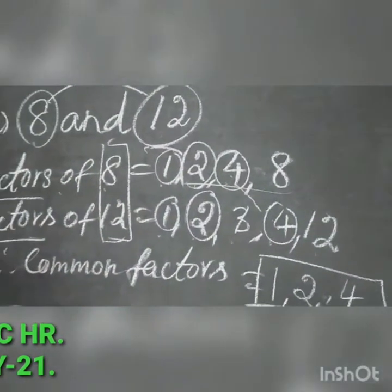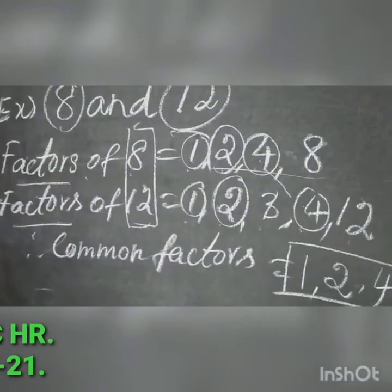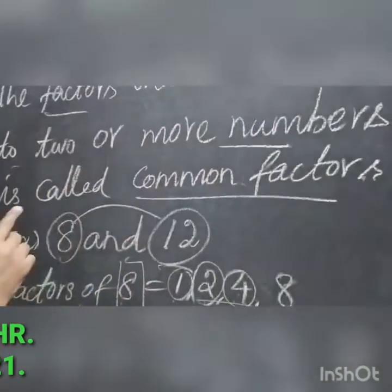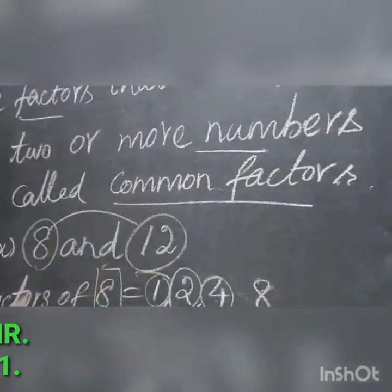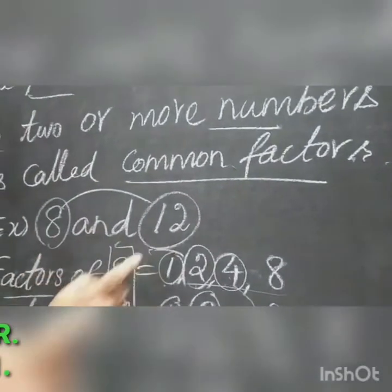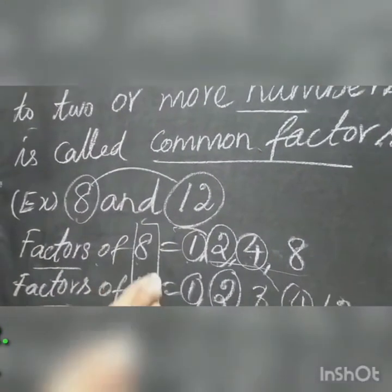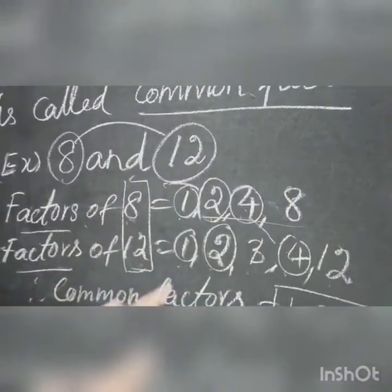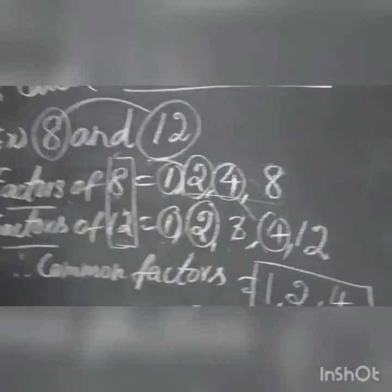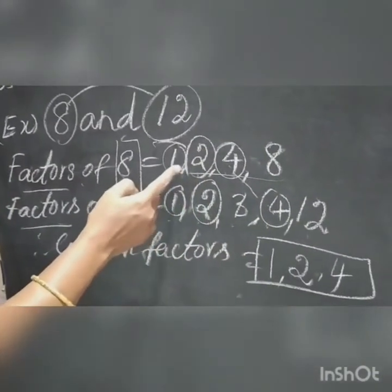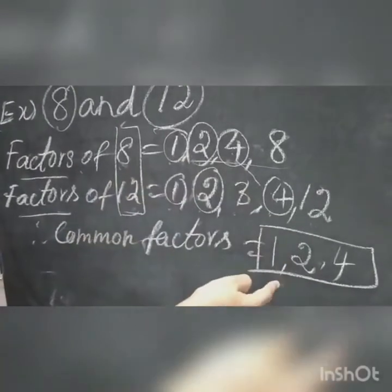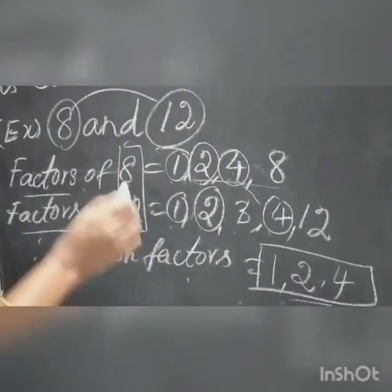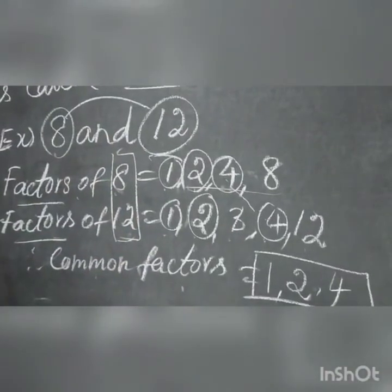The factors that are common to 2 or more numbers are called common factors. For 8 and 12, you find the factors of each, then identify which are common. Here, 1, 2, and 4 are the common factors of 8 and 12.